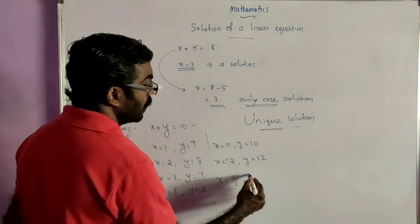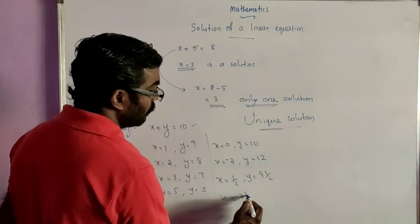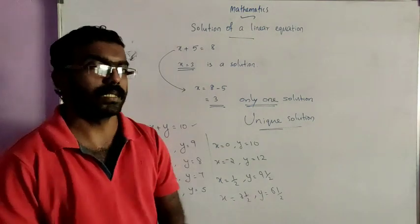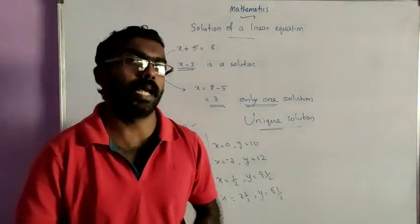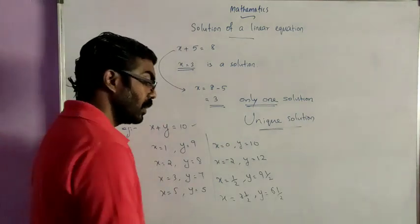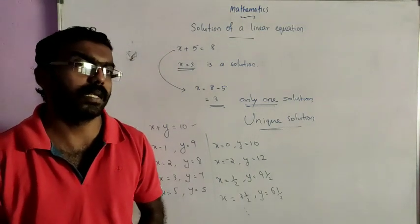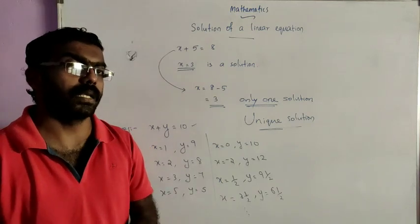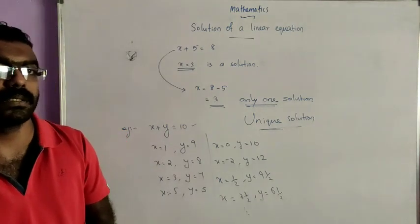If x is equal to 1/2, y is equal to 9 and 1/2. If x is equal to 3 and 1/2, then y is equal to 6 and 1/2, since 3½ plus 6½ gives 10. That means there are infinitely many solutions for a linear equation in two variables. We can find so many answers — an uncountable number of solutions. That is why it is known as infinitely many solutions. A linear equation in two variables has infinitely many solutions.